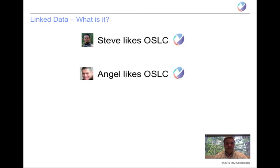Similarly, you may run into someone else in the hallway or find them on another web page, and you've learned that Angel likes OSLC. So this is data you would typically find on the web — but what's the real meaning of this data?